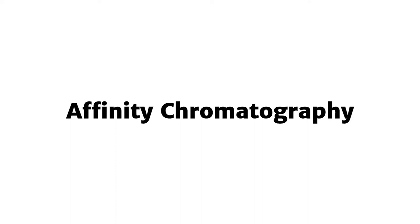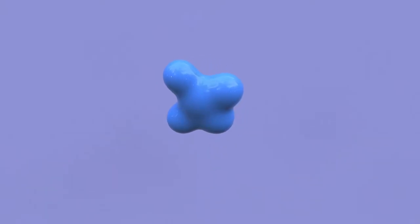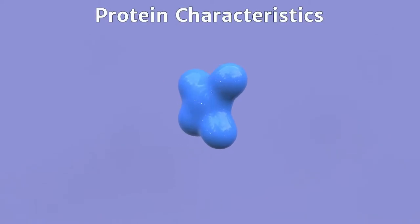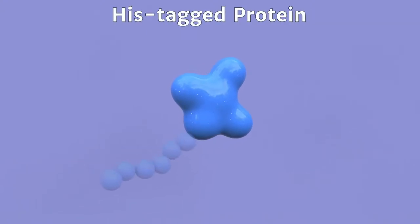A fourth type of chromatography is called affinity chromatography. Although there are many types of affinity chromatography, they all share a common approach that separates proteins based on the presence or absence of specific protein characteristics. For example, proteins can be expressed that have six histidine residues in a row, commonly known as a his tag.